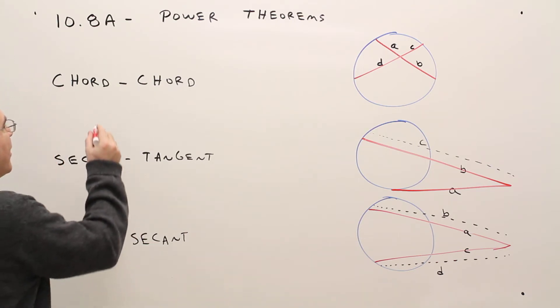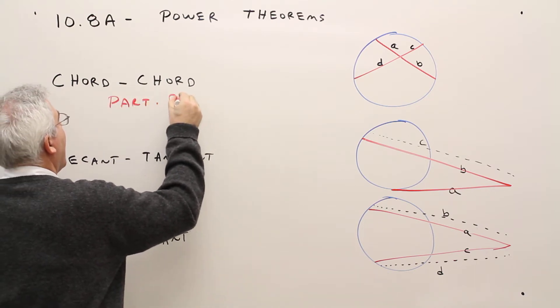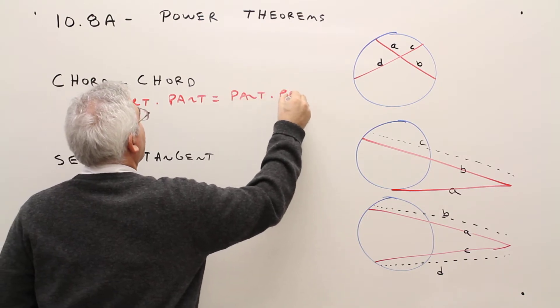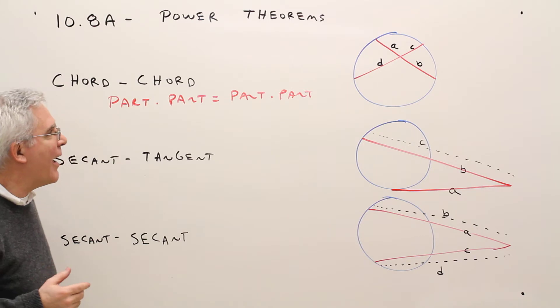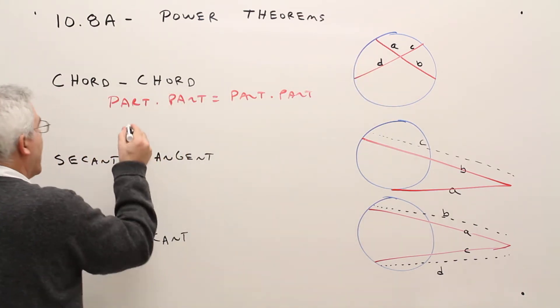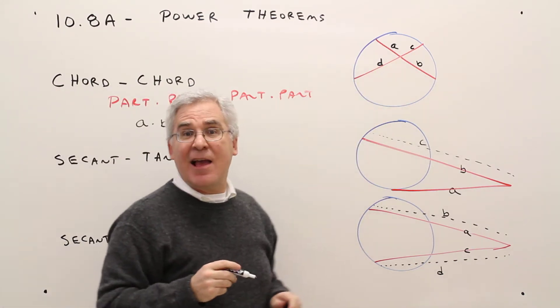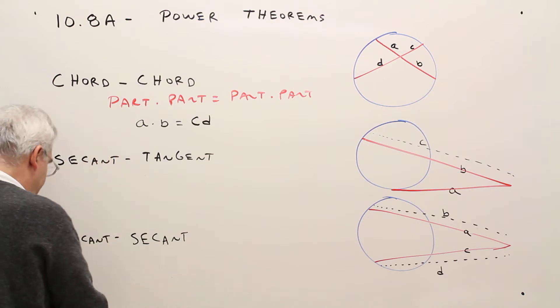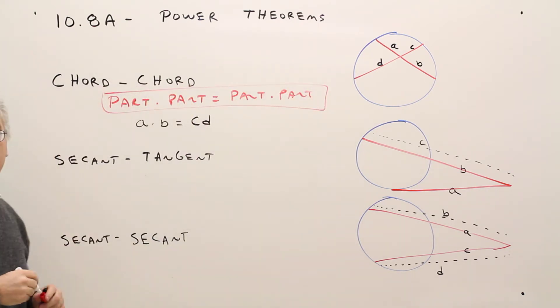So for this one, I think of part times part equals part times part. You might be saying, what the heck is that? Well, part a times part b equals part c times part d. It's hard for me to remember that, so instead I choose to remember that.